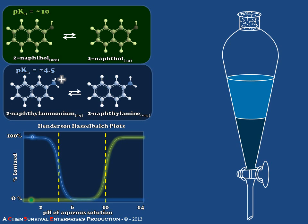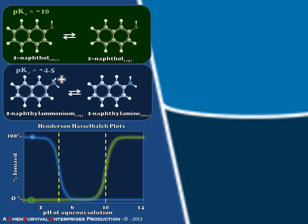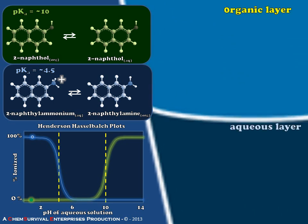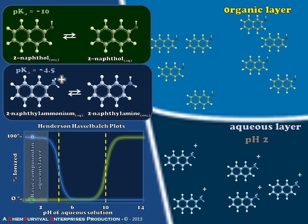So if we start at a very acidic pH and take a look at what we expect to see, our physical mixture should already have partitioned. We expect to see the naphthylamine dissolved as naphthyl ammonium in the aqueous layer, while the naphthol is left as a neutral compound in the organic layer.